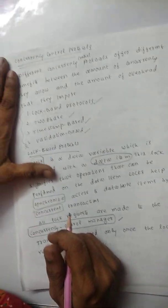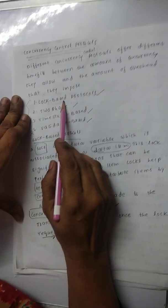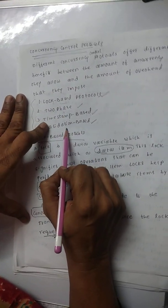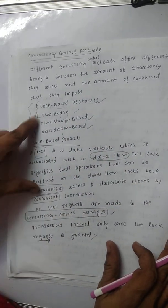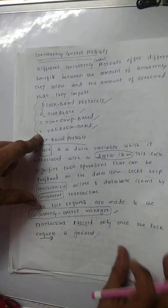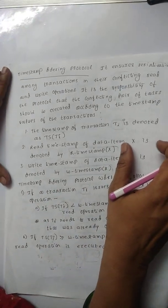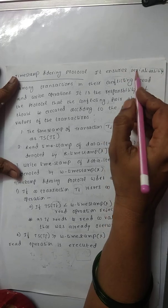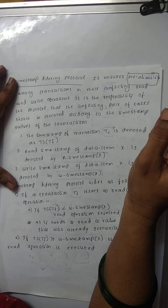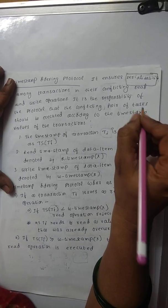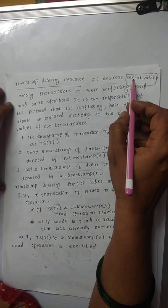Last session we discussed concurrency control protocols. There are four types: lock-based protocols, two-phase, timestamp-based, and validation-based. We have already discussed lock-based and two-phase protocols. In this session we are going to discuss timestamp-based and validation-based protocols. The timestamp-based protocol will ensure serializability among transactions when we have concurrent and parallel transactions, eliminating inconsistencies.